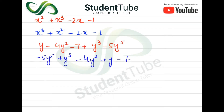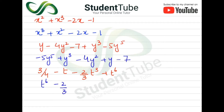Next question 3: 3/4 - t - (2/3)t³ + t⁶. Here the variable is t. We first write the term with the largest exponent — that is t⁶. After t⁶, we look for the next smaller exponent: -(2/3)t³ (exponent 3) comes next. Then comes -t (exponent 1), and finally +3/4, which has no variable and goes last.